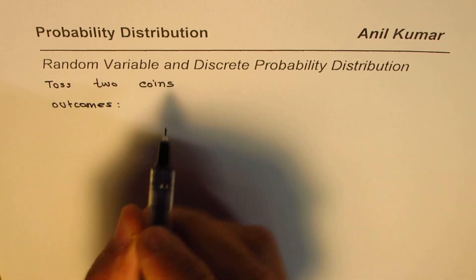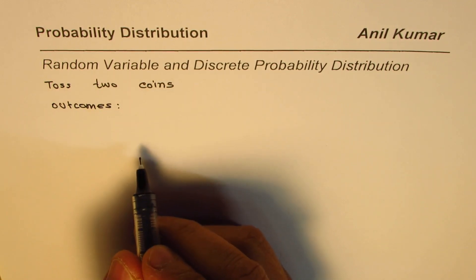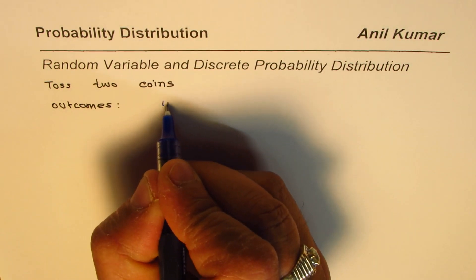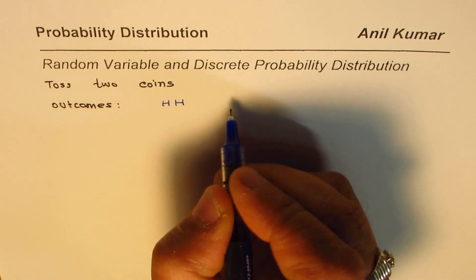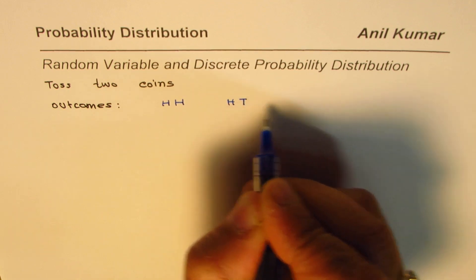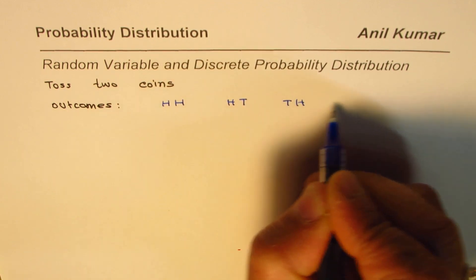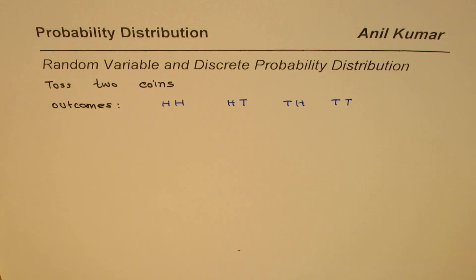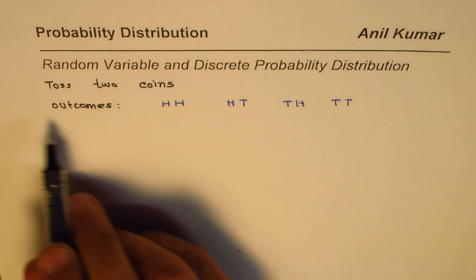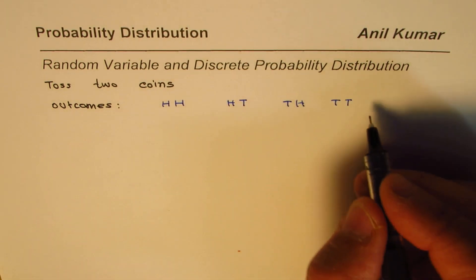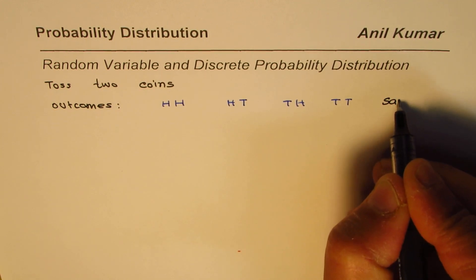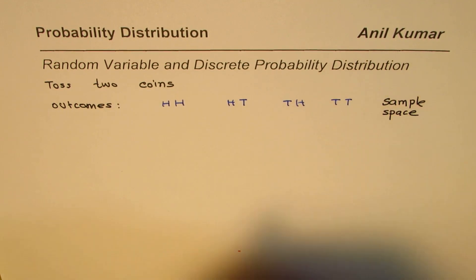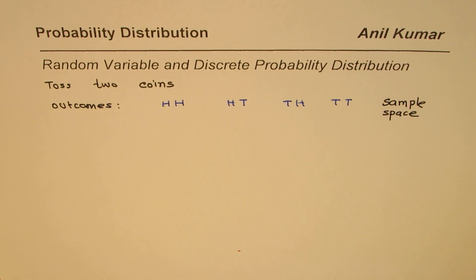In this experiment of tossing two coins, the possible outcomes are that you could get two heads, you could get head and tail, tail and head, or both could be tails. These are the possible outcomes, and they form the sample space.